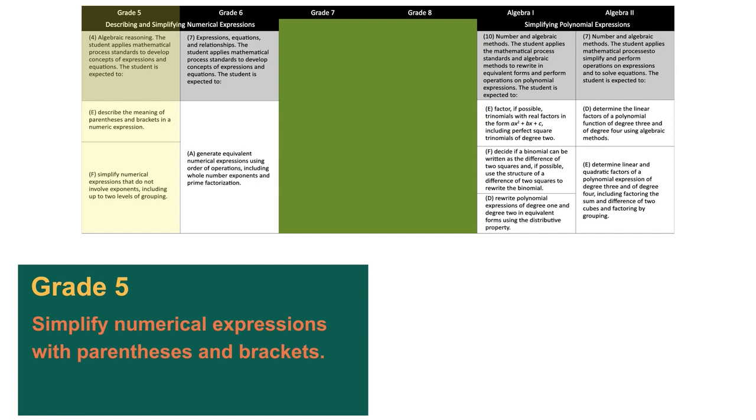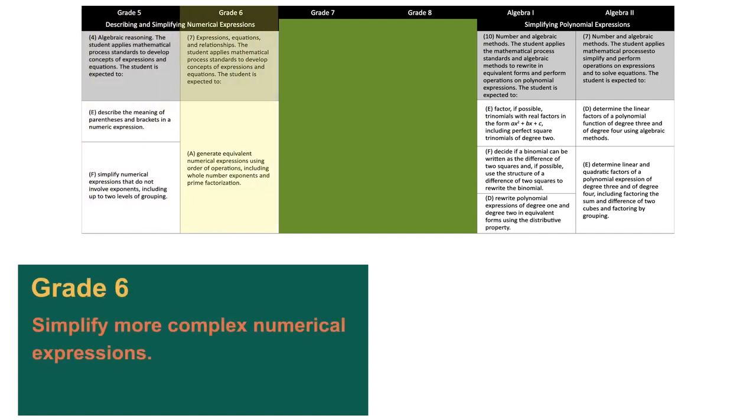Students began in 5th grade to see parentheses and brackets in basic numeric expressions and simplify them. Then, students simplified more complex numerical expressions using the order of operations in 6th grade. They also learned to use exponents with prime factorization to generate equivalent expressions.